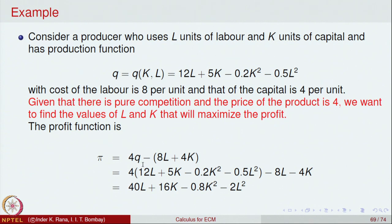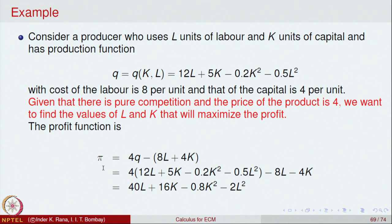The revenue is 4 times Q because the price of the product is 4, so revenue equals 4Q. The cost function is 8L + 4K (8 per unit for labour and 4 per unit for capital). Substituting and simplifying, the profit function becomes: π(L, K) = 40L + 16K − 0.8K² − 2L².